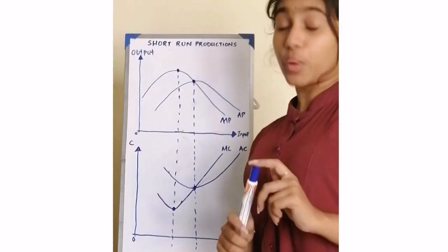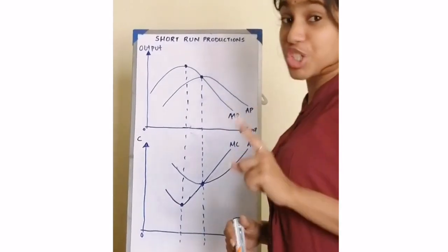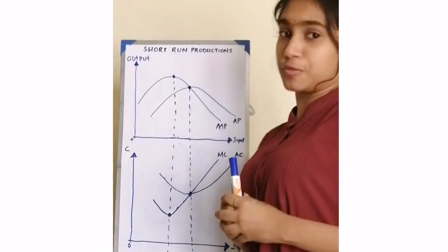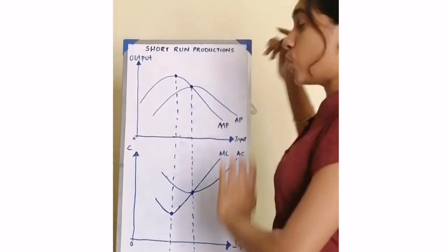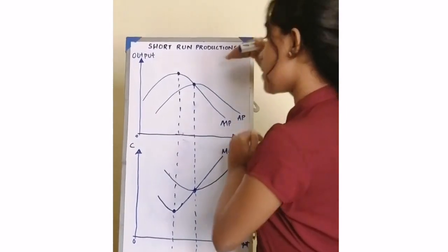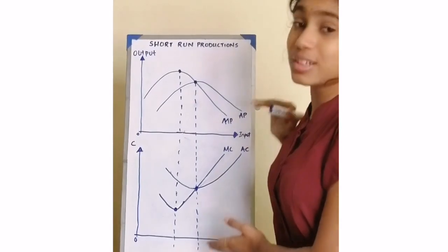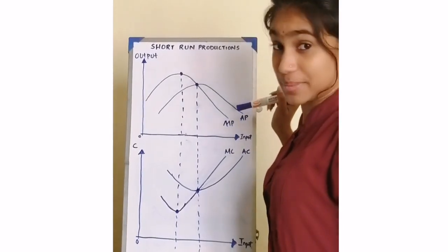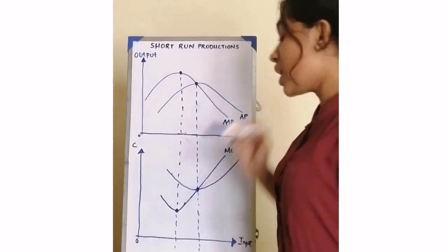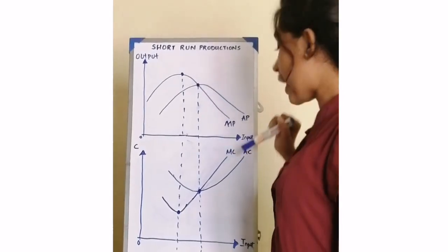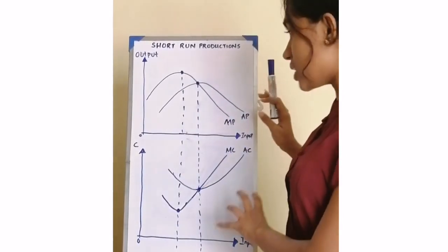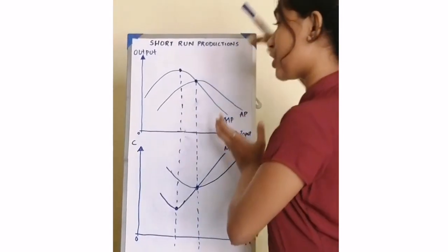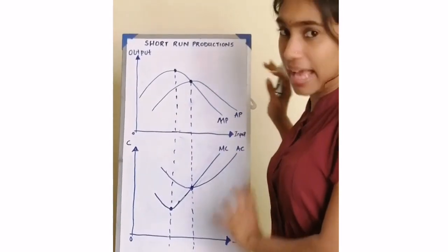Another question that could be asked is the relationship between productions and costs in a short-run production firm. For that, we need to draw the graph of the production curves and the graph of the cost curves. In the production graph we have marginal product and average product; in the cost graph we have marginal cost and average cost. At a glance, the cost curve graph is the mirror image of the production graph.